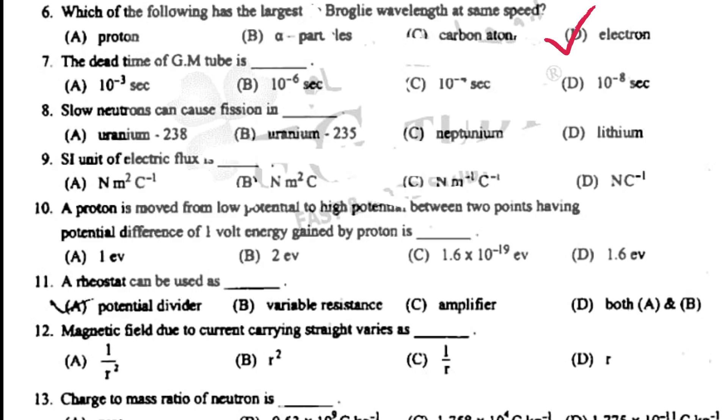The dead time of GM tube is 10 to the power minus 4 seconds. Slow neutron can cause fission in U-235.